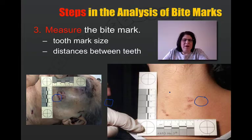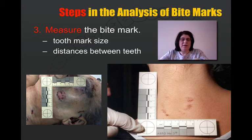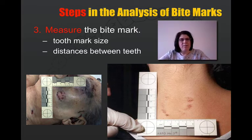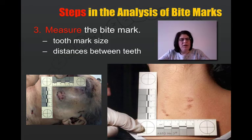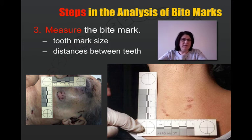The third step in bite mark analysis is the measuring. They use a two-sided measuring device and photograph it. Any kind of bruises or injuries to the body are going to heal, so you need to make sure that you have photographs taken when everything is fresh to have the best amount of evidence. The measuring is really, really important — everybody can have all the same perfect teeth, but everyone's mouths are a little bit of a different size in every direction. So measuring is really where it gets to be kind of more exact.